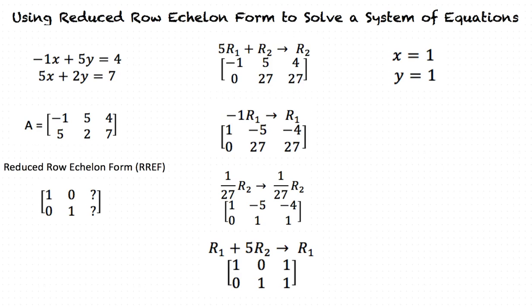When these values are inserted into our systems of equations, we see that they give us the correct answers. In the first equation, negative 1 times 1 plus 5 times 1 is equal to 4. And in the second equation, 5 times 1 plus 2 times 1 is equal to 7.